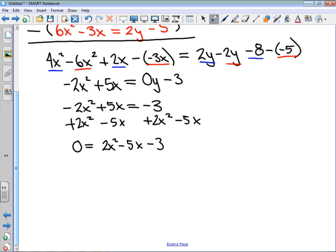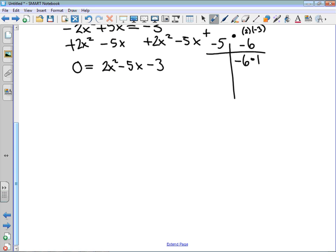To factor this, I'll write my little t-chart over here, I need two numbers that multiply to negative 6. That's the 2 times the negative 3, because the a isn't 1. And the same two numbers have to add to negative 5, the coefficient on my x variable. Those two numbers are negative 6 and positive 1. It is the trickier factoring, it's called decomposition, where I'm going to rewrite the middle term using the two numbers we just determined. So 0 is equal to 2x squared, the order doesn't matter.